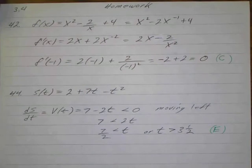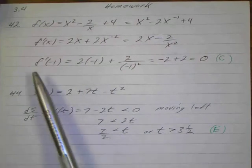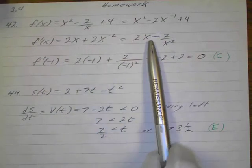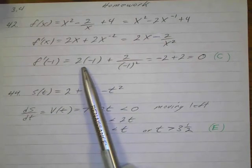They want to find the instantaneous rate of change at x equals negative 1, so I just put negative 1 in here, f prime of negative 1. So that's going to be 2 times negative 1.